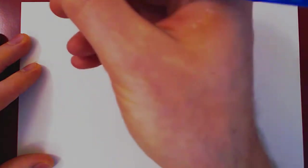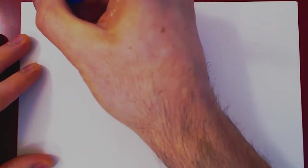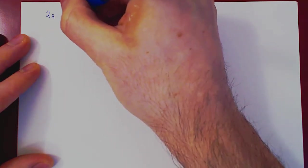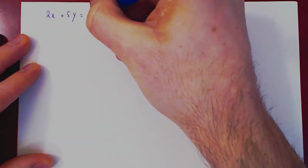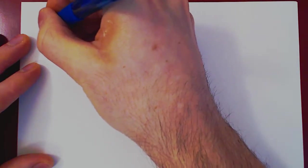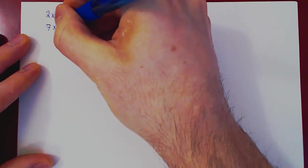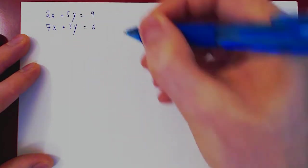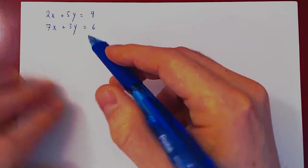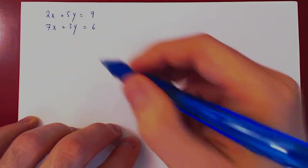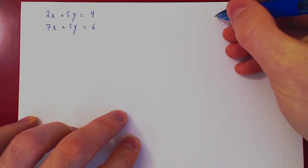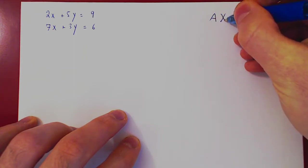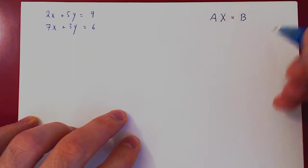So let's start very simply with a linear system in two variables, two equations. Let's say we have 2x plus 5y equals 9 and 7x plus 3y equals 6. The question I'm going to ask now is can we rewrite this linear system in the following form as a matrix A times another matrix X equals a third matrix B.